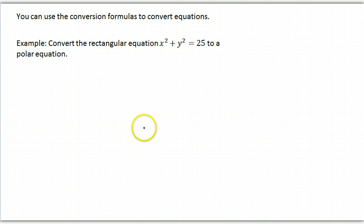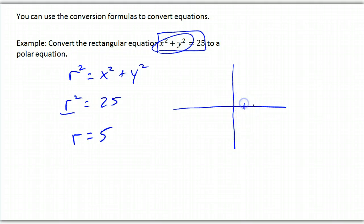Okay, so we can also use conversion formulas to convert actual equations. Here's an easy one. We're going to convert the rectangular equation x² + y² = 25. Well, r² = x² + y². So r² is going to equal 25 because I can just replace that x² + y² with r², which means that r = 5. And that should make sense if you think about it because remember what this graph's, x² + y² = 25? That's a circle centered at the origin with a radius of 5.